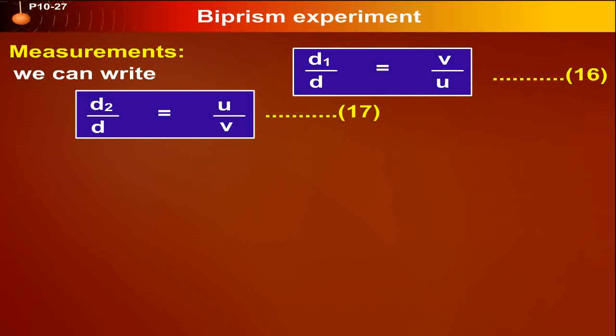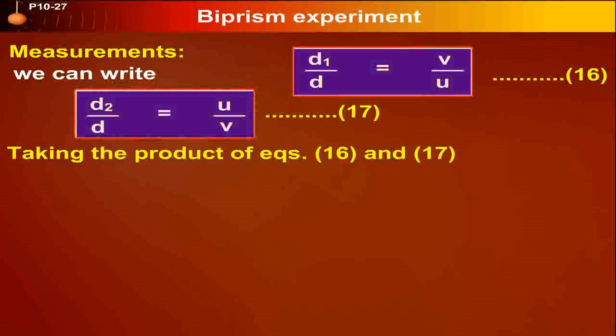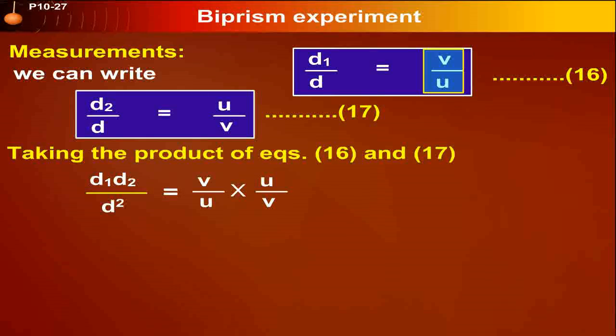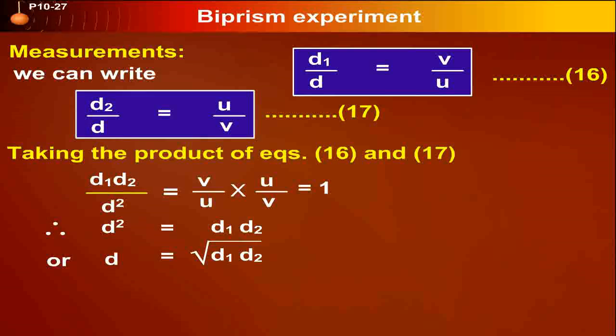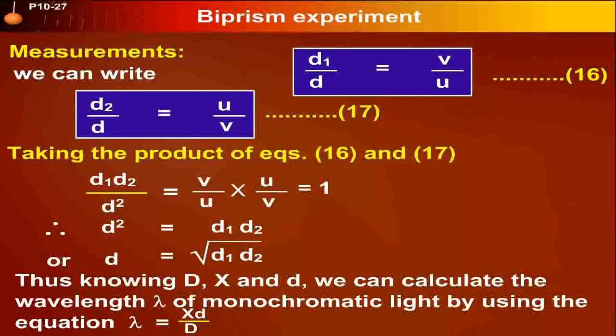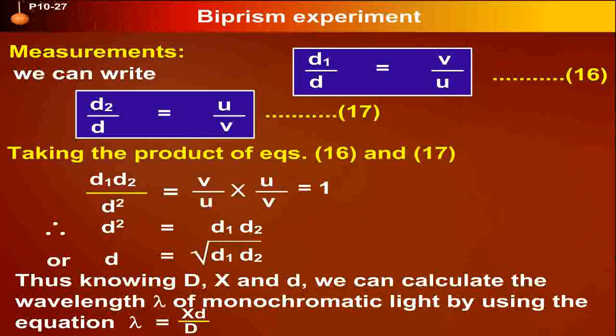Taking the product of equations: small d1 small d2 upon small d squared equals v upon u times u upon v, which equals one. Therefore, small d squared equals small d1 times small d2, or small d equals square root of small d1 times small d2. Thus, knowing d, x, and small d, we can calculate the wavelength lambda of monochromatic light by using the equation: lambda equals x times small d upon d.